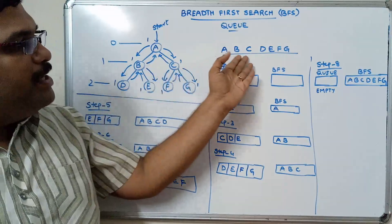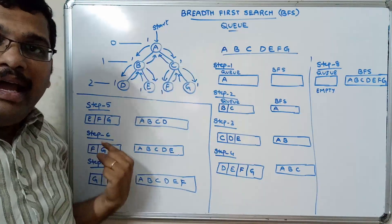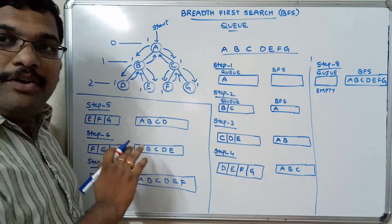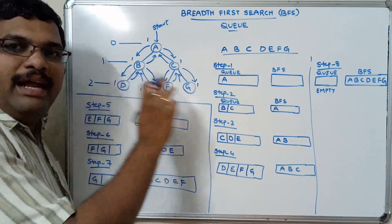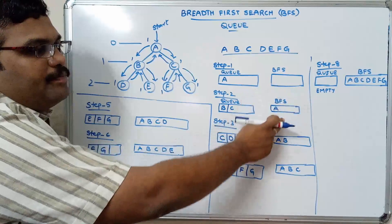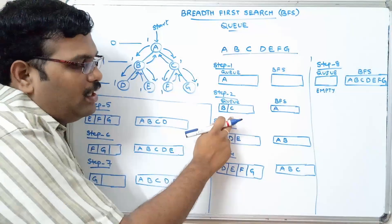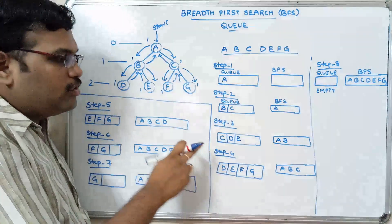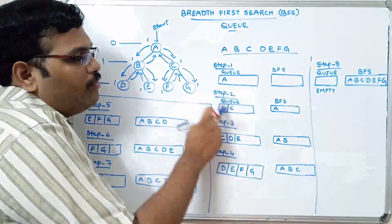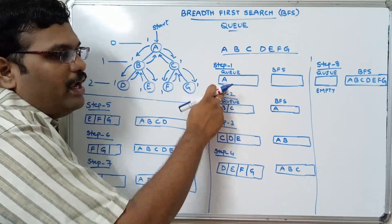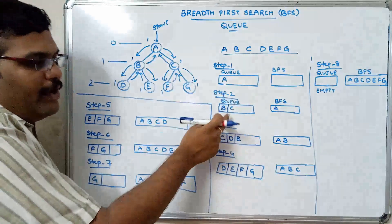Level two is the last level, so DEFG is the answer, all implemented using the queue. Insert a node into the queue; if the queue is not empty, remove the node from the front and place it in BFS, then insert all its adjacent nodes at the rear end. We inserted A, removed A, placed it in BFS, then inserted adjacent nodes B and C.